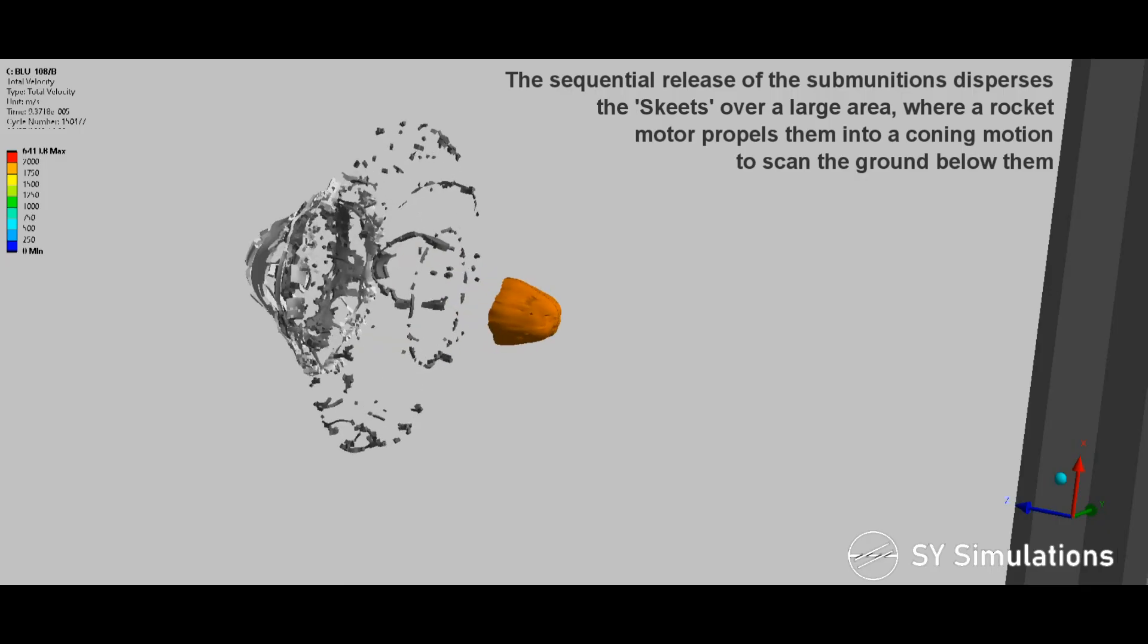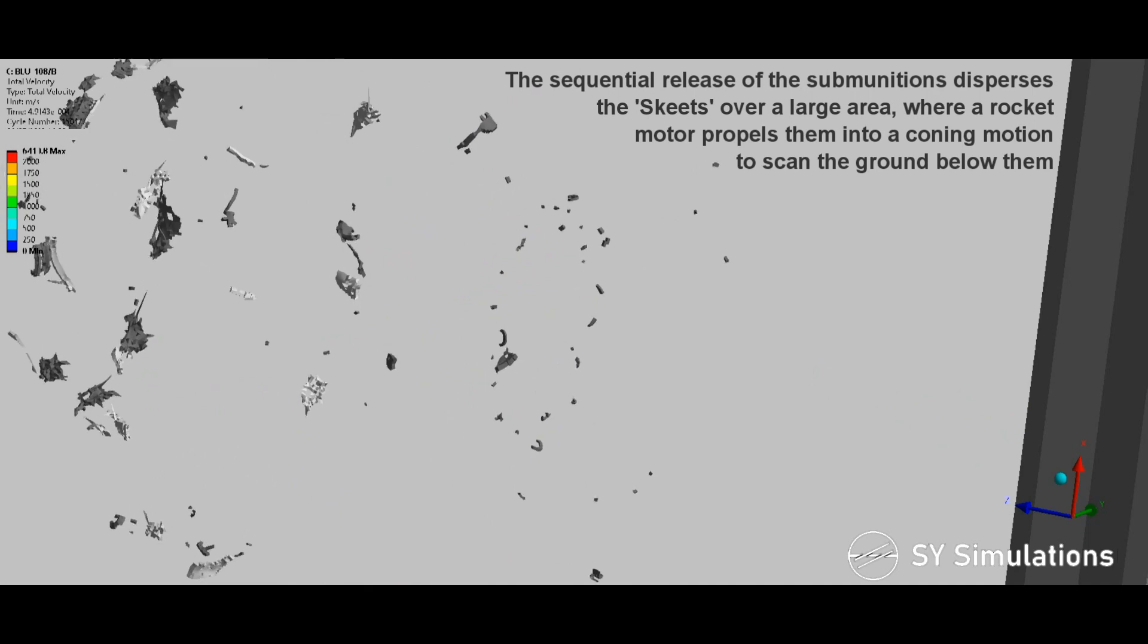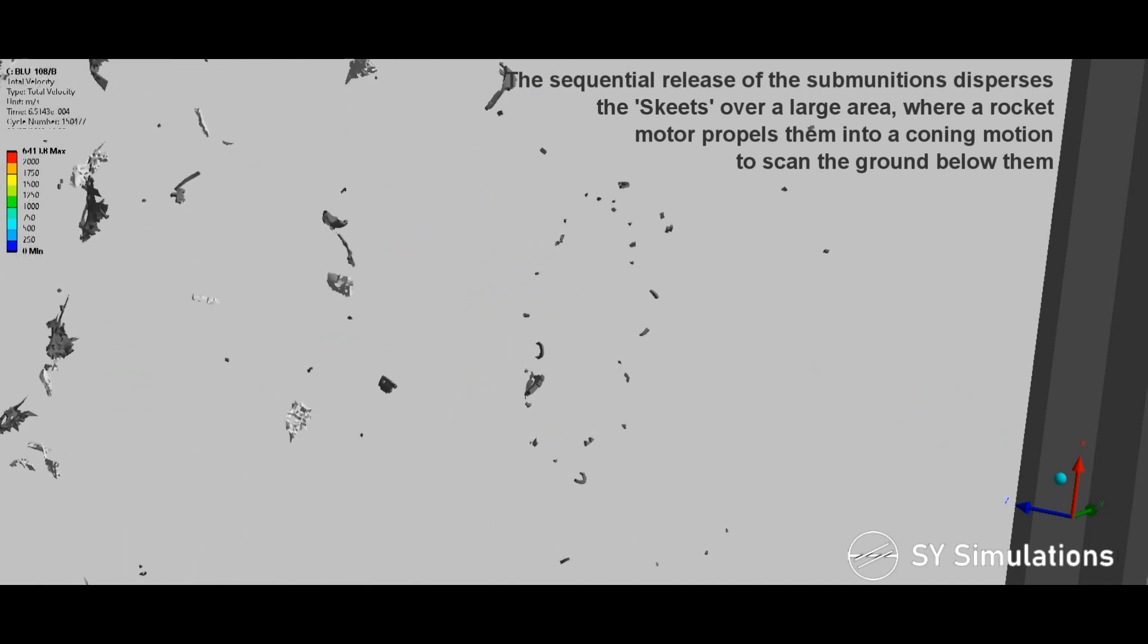The sequential release of the submunitions disperses the skeets over a large area where a rocket motor propels them into a coning motion to scan the ground below them.